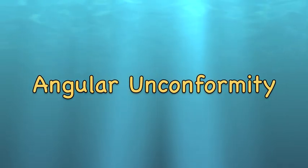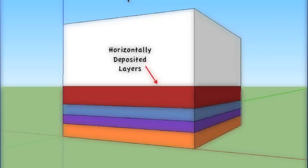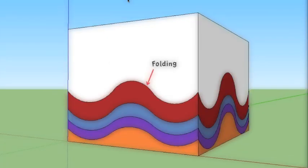An angular unconformity is when tectonic forces have folded strata layers, which have then in turn been eroded off. Once they've been eroded, more strata layers have been laid on top.